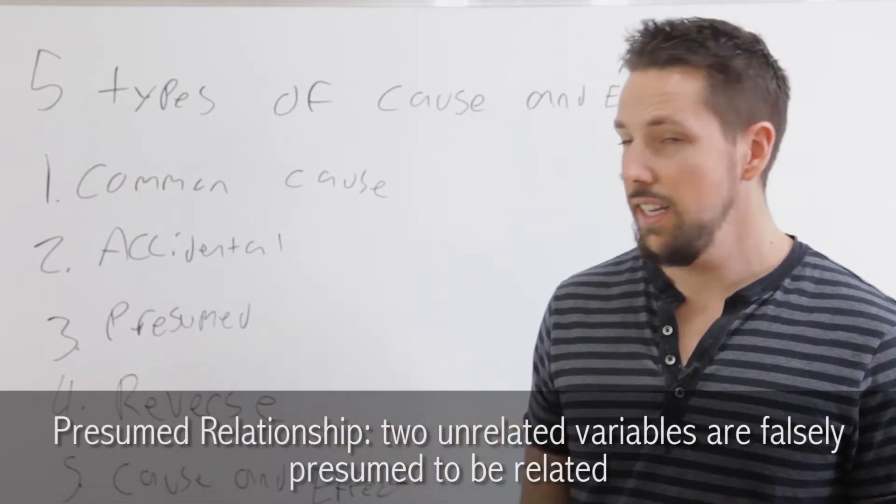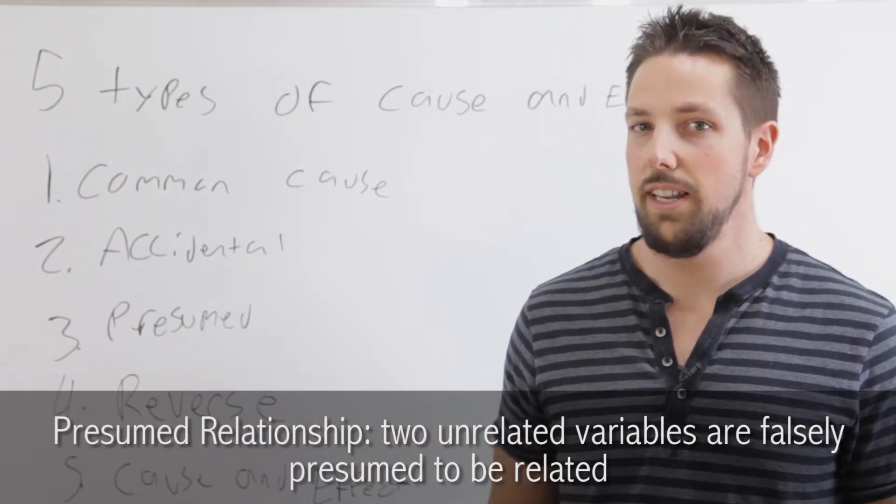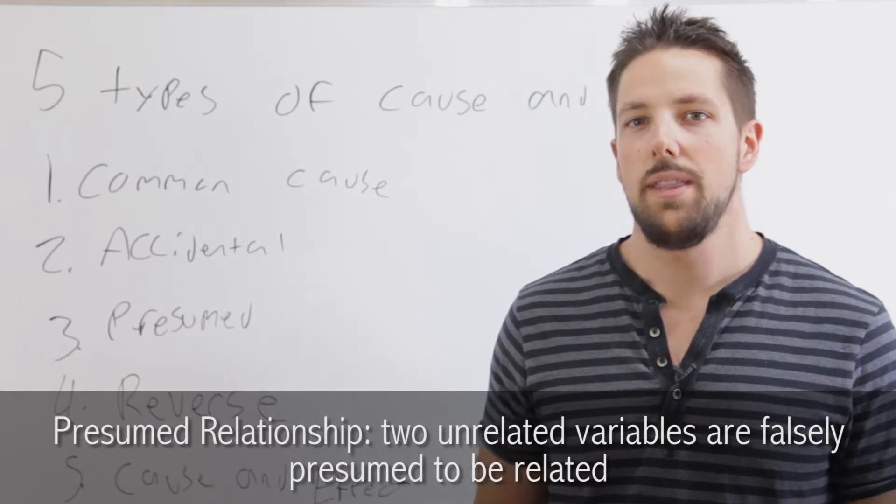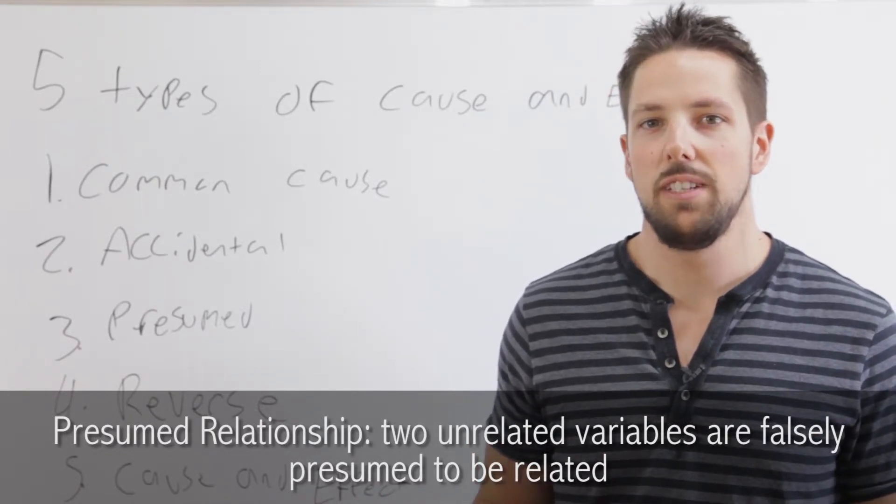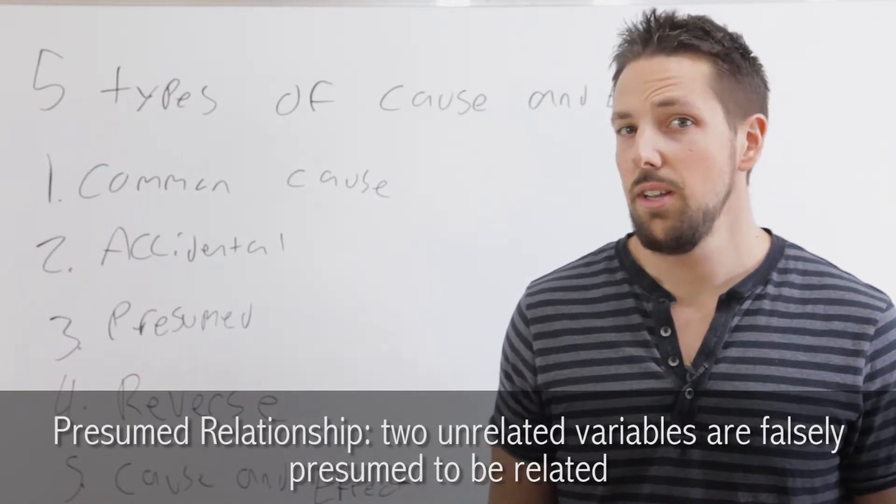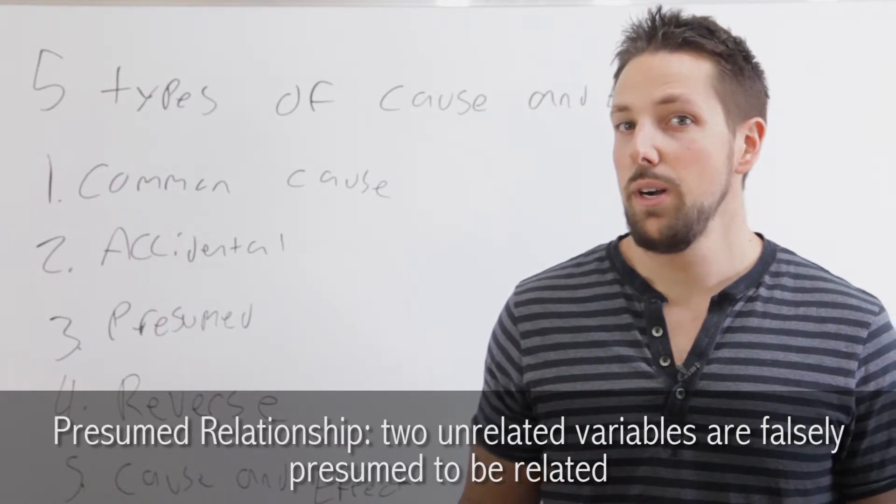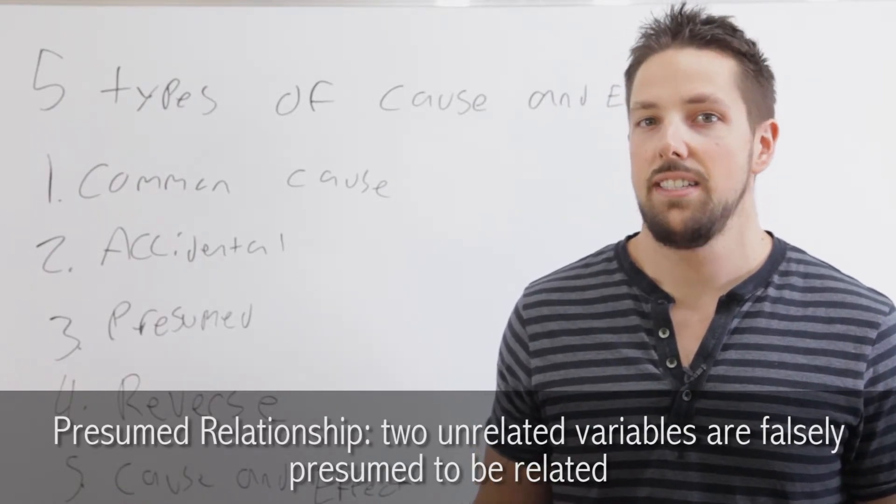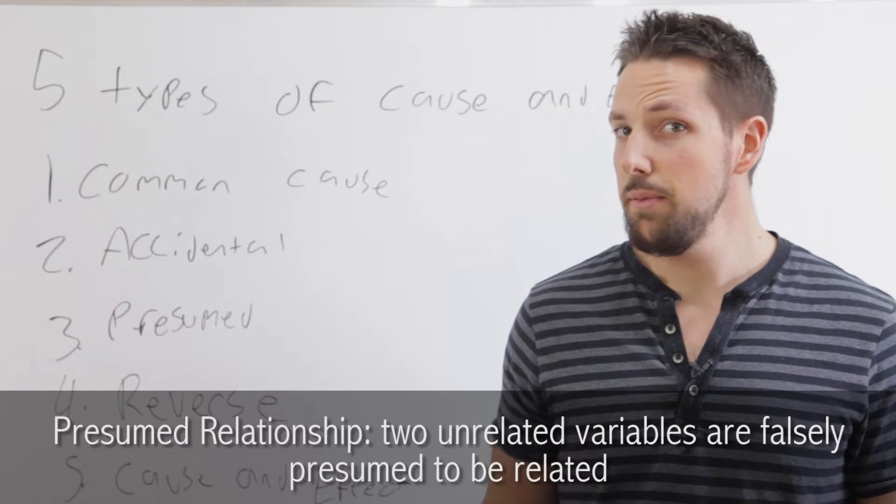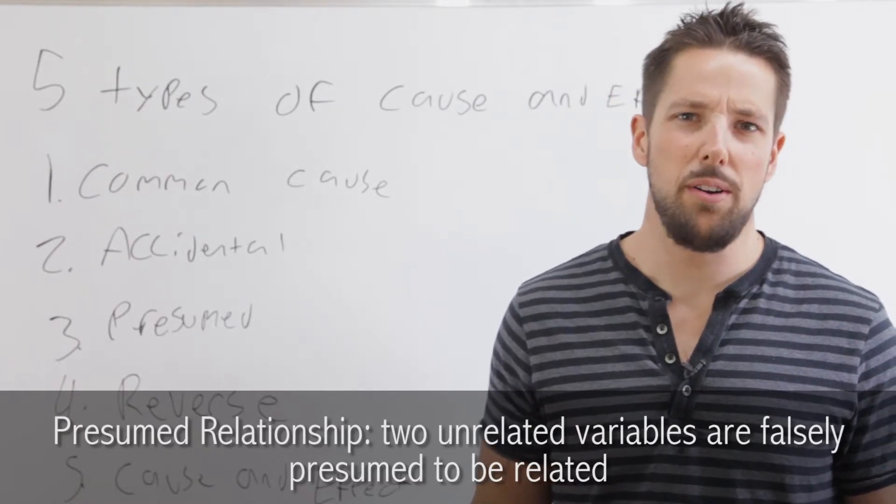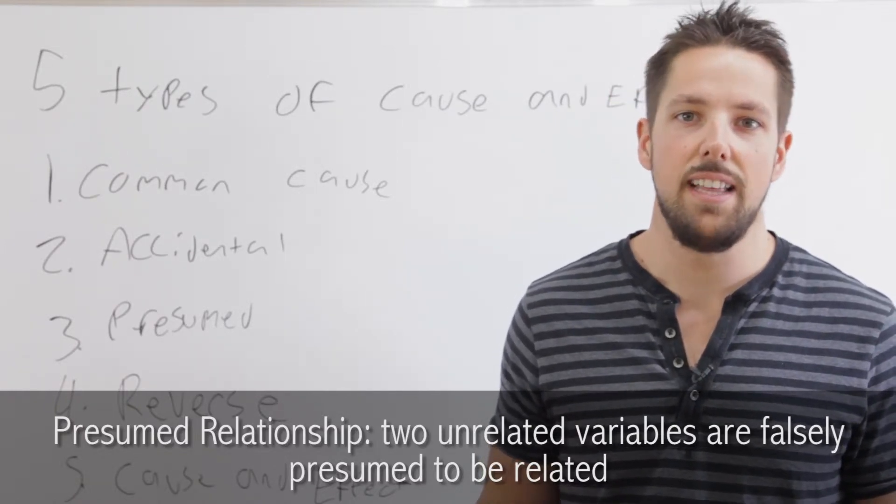The third type, presumed, is when you think there should be a relationship between two variables, but then you realize that there's no real reason that should happen. That would be something like people who wear glasses do well on math tests. You kind of think maybe people who wear glasses do, but then the more you think about it, you realize there's nothing scientific to that.